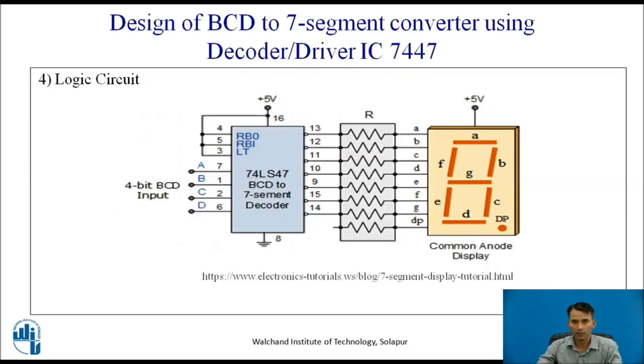We are designing BCD to 7-segment converter for common anode display. For common anode display, we require a driver IC which is known as 7447. Here you can see 74LS47 BCD to 7-segment decoder which has 4 BCD inputs as ABCD, and it has 3 more control inputs known as LT for lamp test, RBI ripple blanking input, and RBO ripple blanking output. All are connected to plus VCC for normal operation, and output of 7447 IC is given to 7-segment display. Here we are using common anode 7-segment display. Before that, we have connected resistors to protect the common anode display.